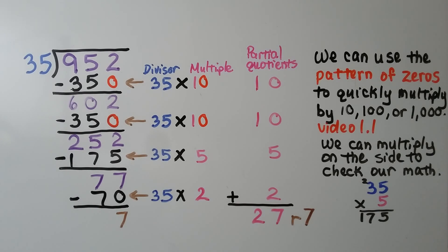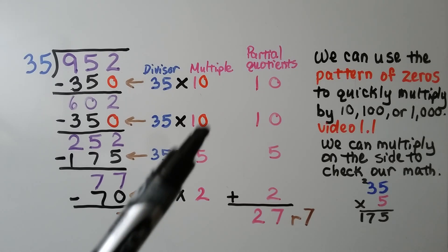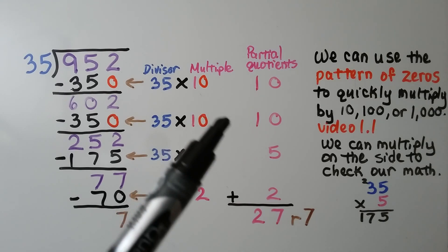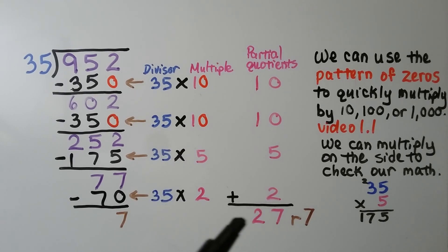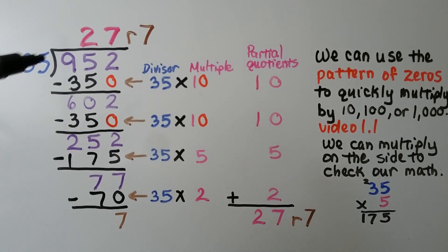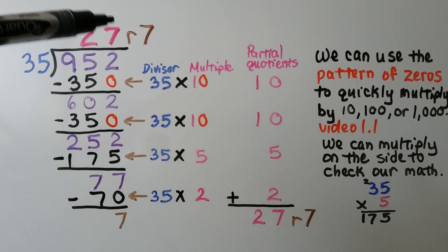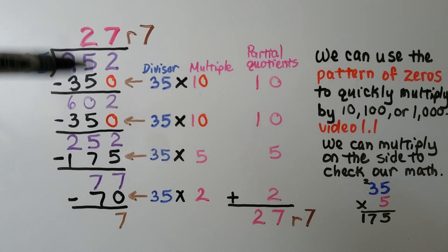We can use the pattern of zeros to quickly multiply by 10, 100, or 1,000 — we learned that back in video 1.1, linked in the description. We add our partial quotients: 10, 10, 5, and 2. Our full quotient is 27 with a remainder of 7.